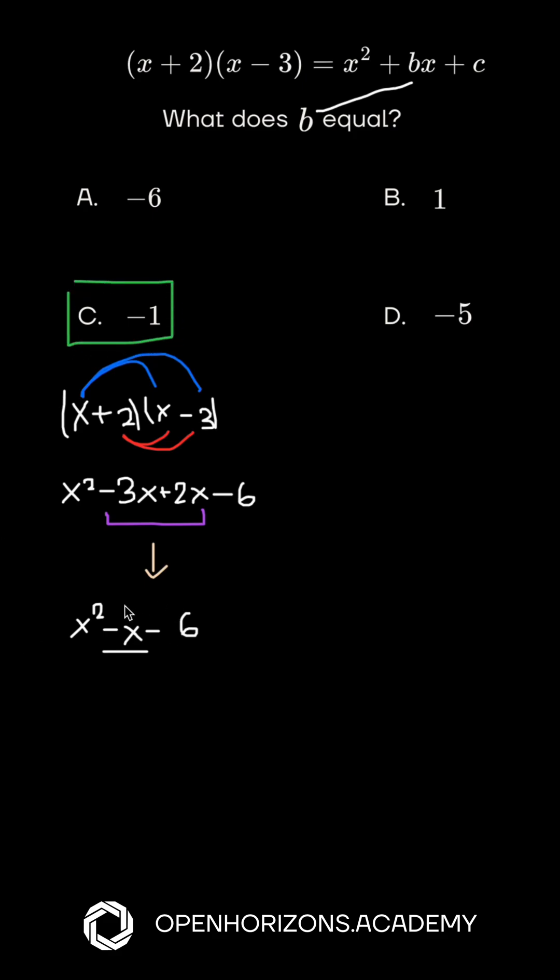So we're looking for what b is, and b is negative 1. So the correct answer is, you guessed it, negative 1, which is right here.